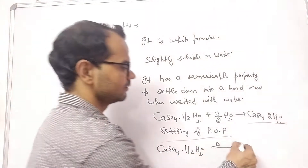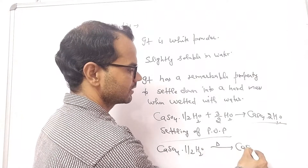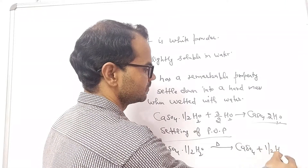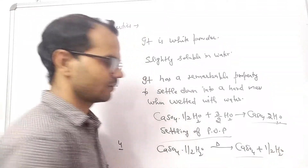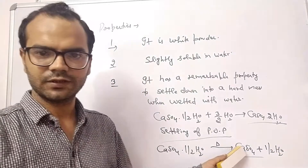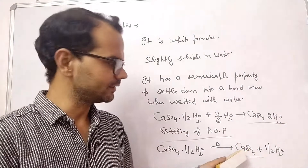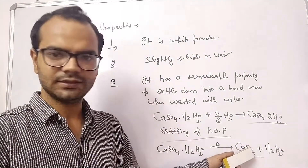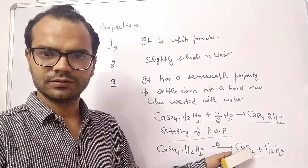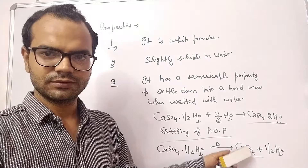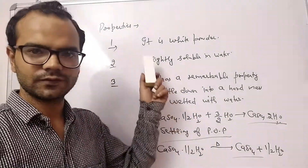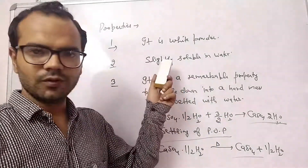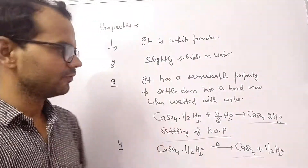Fourth property: if we heat calcium sulfate hemi-hydrate again, it loses its water molecule and the remaining structure is anhydrous calcium sulfate — CaSO₄ — which can no longer be considered POP. These are the properties of POP.